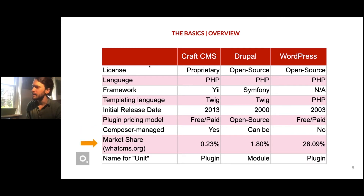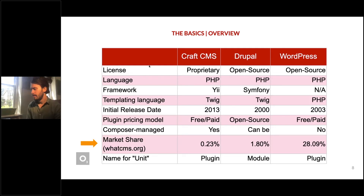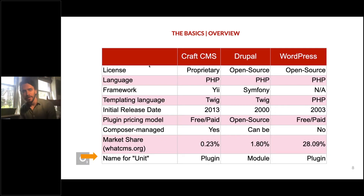For market share: Craft represents 0.23% — less than one percent — Drupal about two percent, and WordPress about 28 percent, having been around so long. The name for a plugin or module is also different across the CMSs: Craft says 'plugin,' Drupal says 'module,' and WordPress says 'plugin.'